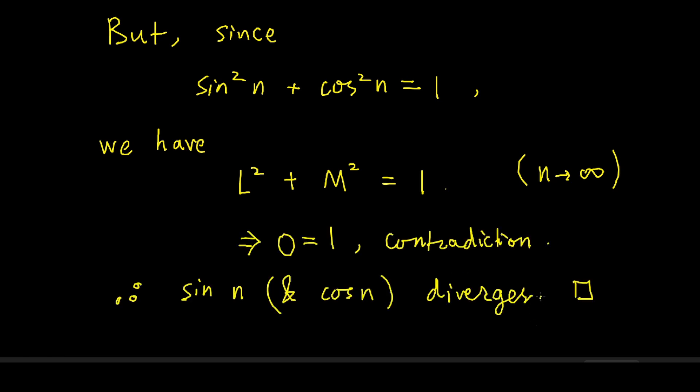And therefore, we conclude that sine of n and of course cosine of n diverge. And that's the end of our proof.